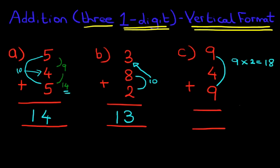9 times 2 is 18. Now, we have to add the 18 to the 4. What is 18 plus 4? 18 plus 4 is 22.